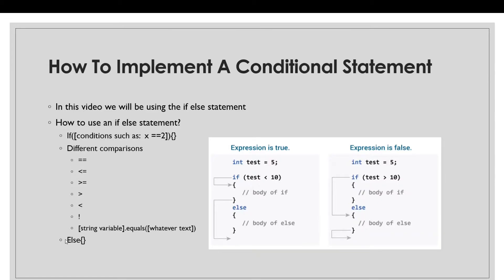If all else fails, it would run the block of code inside the else statement. But what if you didn't put in the else statement? Well, if the condition isn't true in the if statement, it would skip over the if statement and run the rest of the code. If you put in the else statement and the condition in the if statement isn't true, it would go right to the else statement. You can see in this diagram: if the expression is true, it runs the block of code inside the if statement, and if false, it skips to the else statement.